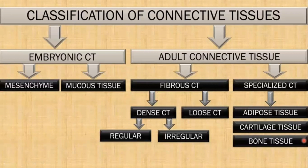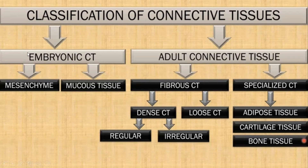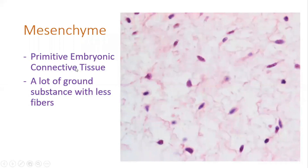Now let's go to the classification of connective tissue. We can classify them according to whether they exist before or after birth. We call them embryonic if they are before birth, and adult connective tissue after birth. In the embryonic connective tissue we have mesenchyme cells and mucus tissue. Mesenchyme is the primitive embryonic connective tissue, which means all the other connective tissues in our body are derived from it.